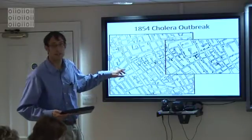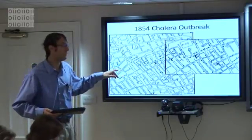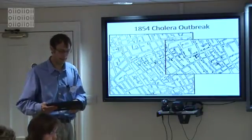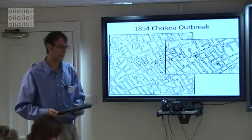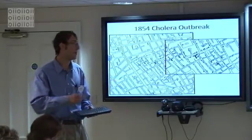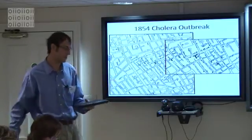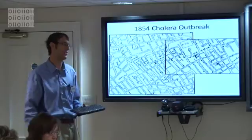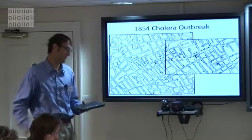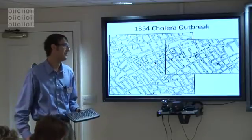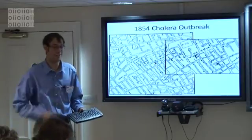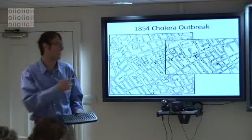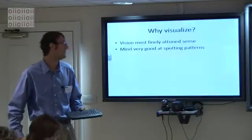Interestingly, going back to Eric and Ralph who started this off, his data was initially collected based on William Farr, who used the same data to support the alternative hypothesis. And Jon Snow plotted it this way, thought about it this way, and connected it to the water system.